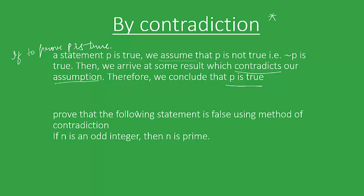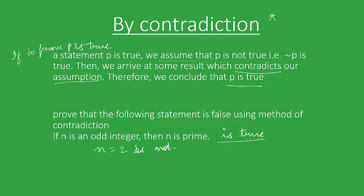Let's work out an example proving a statement to be false using the method of contradiction. To prove a statement false by contradiction, we assume the contrary — that the statement is true. Suppose 'if n is an odd integer then n is prime' is assumed true. Then n equals 2 would be odd but not prime since it's an even number. But from prior knowledge, n equals 2 is a prime number. We have arrived at a contradiction, so our assumption was false.